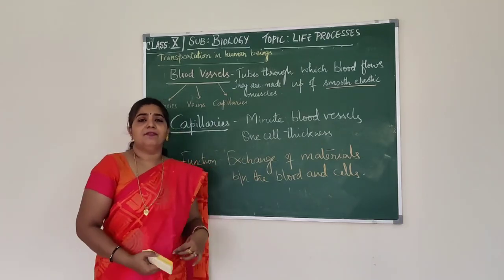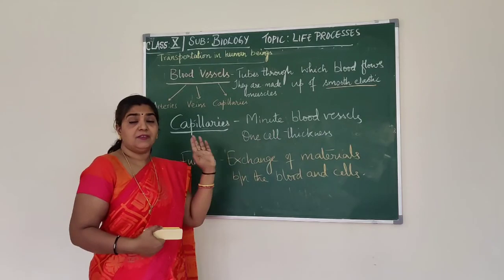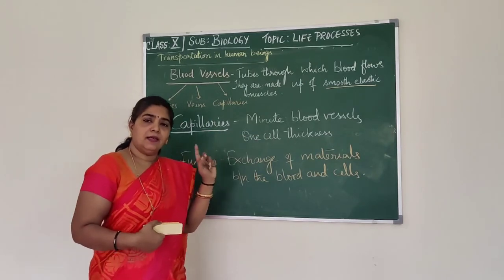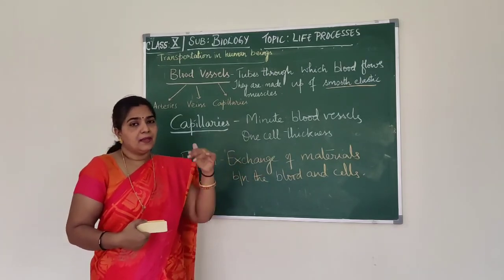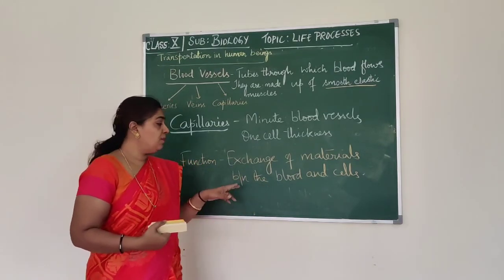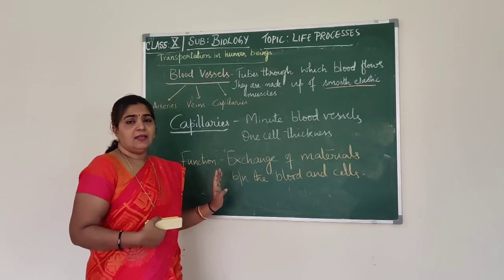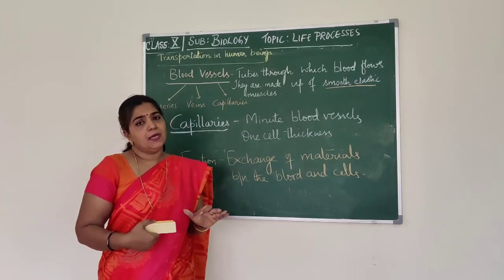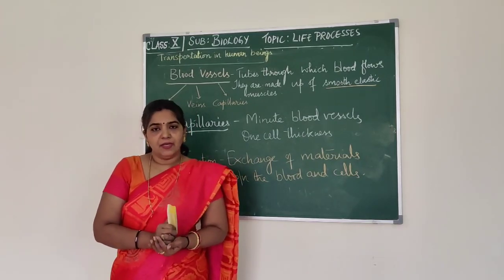So we have three different types of blood vessels: arteries, veins, and capillaries. Arteries carry blood away from the heart to various parts. Veins bring blood from various parts of the body to the heart. Capillaries help in exchange of materials between the blood and the cells. In the next video, we will be learning about the structure and functioning of the heart.